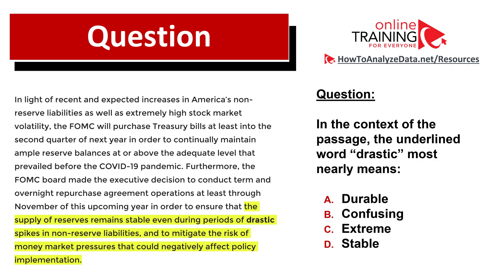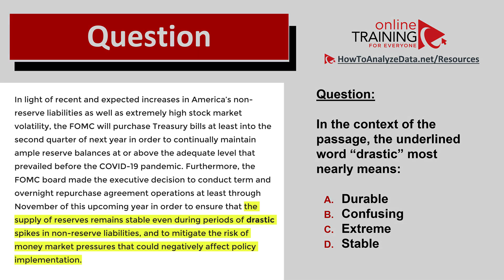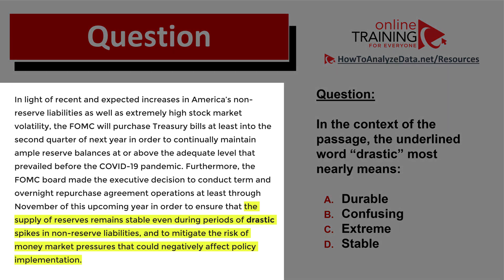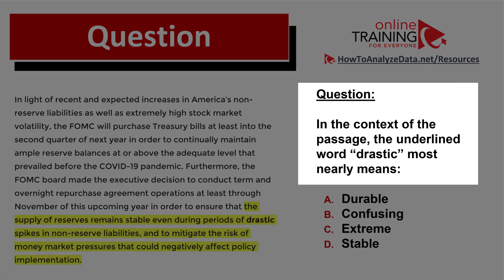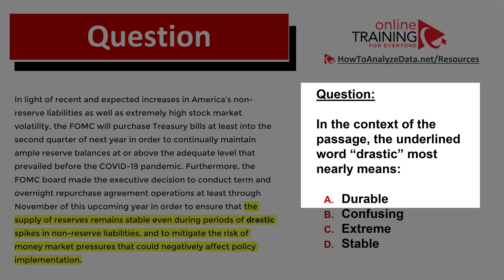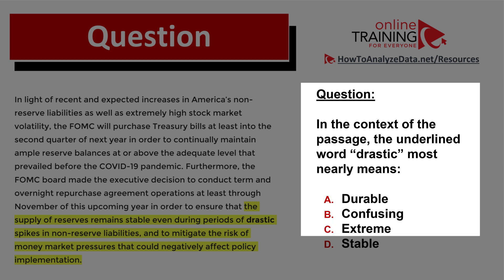Now here's a question for you to try. Please pause this video and read the passage on the left. Then answer this question: in the context of the passage, the underlined word 'drastic' most nearly means — choice A: durable, choice B: confusing, choice C: extreme, or choice D: stable.